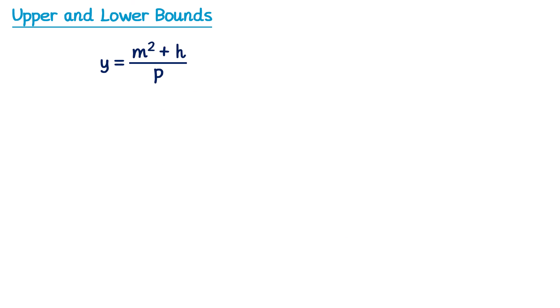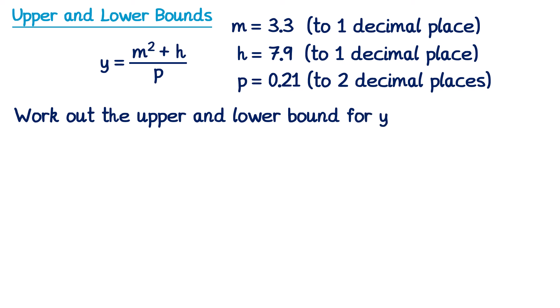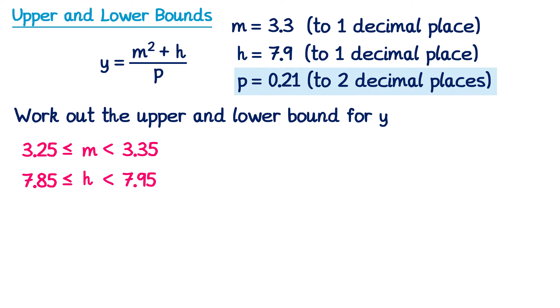Let's try a second algebraic example with a more complicated formula: y = (m² + h) / p. We have values for m, h, and p. We start by writing error intervals for each: m is 3.3 to one decimal place, so 3.25 ≤ m < 3.35. h is 7.9 to one decimal place, so 7.85 ≤ h < 7.95. p is to two decimal places, so 0.205 ≤ p < 0.215.